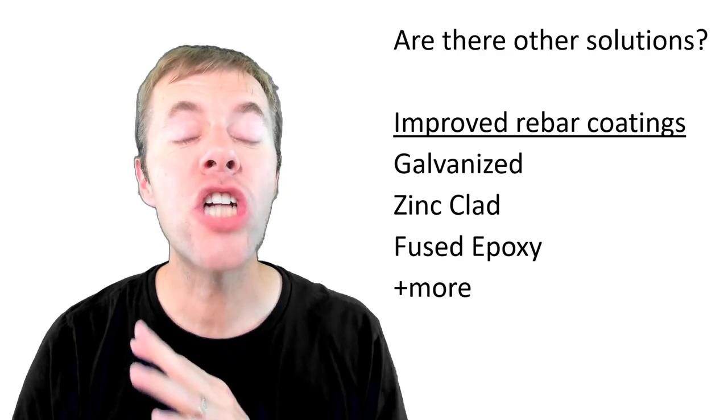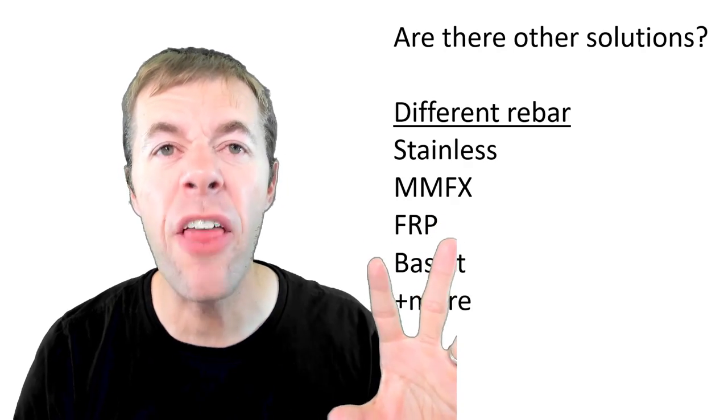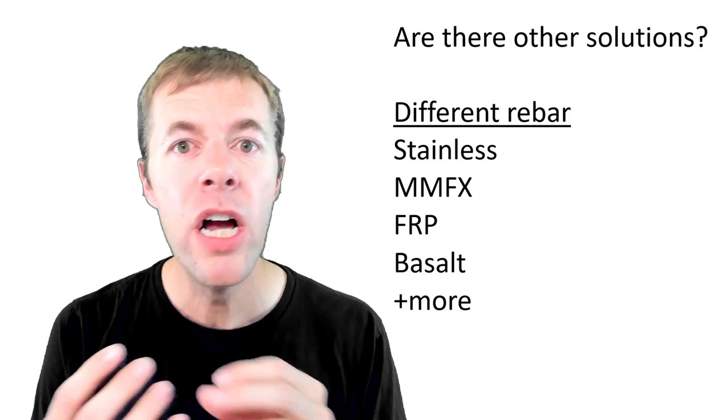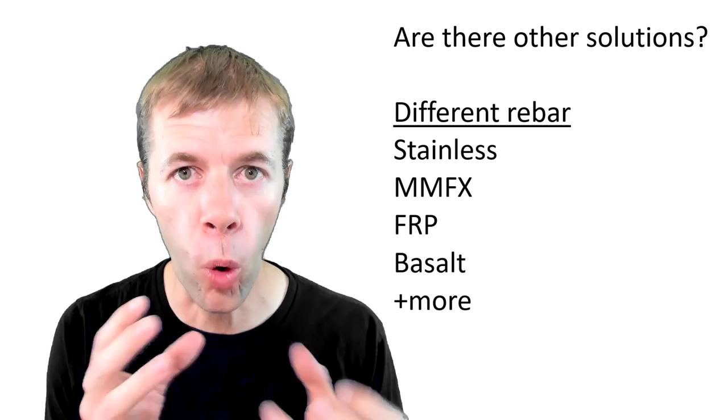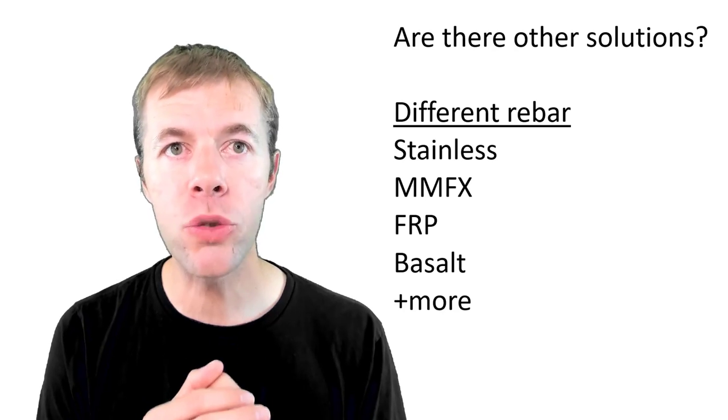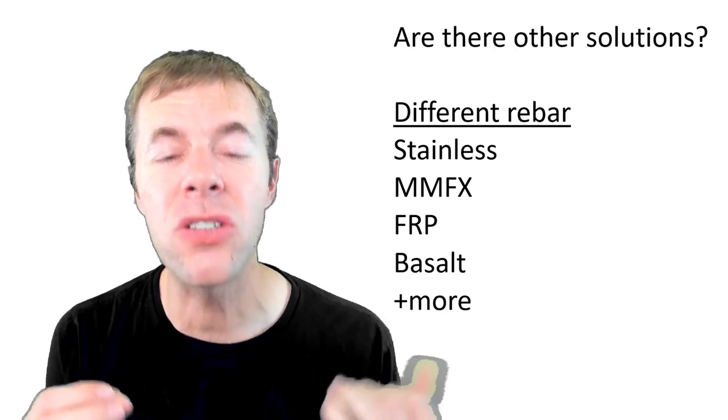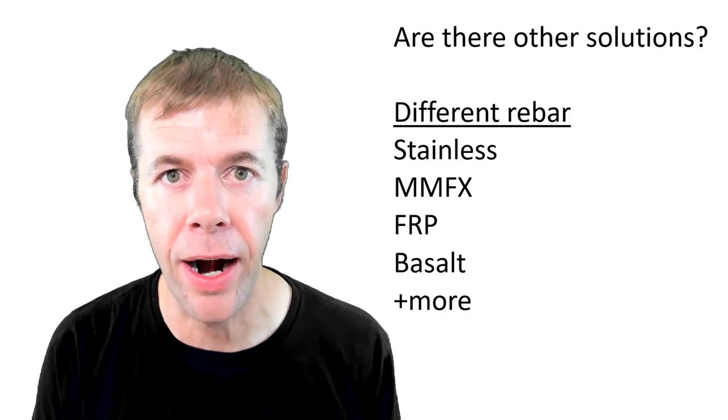Some people are trying to improve coatings around the rebar. Others are trying to change the rebar altogether - use different chemical types, use stainless rebar, use this chrome modified poor man's stainless rebar, use fiber reinforced plastics, use basalts or glass. There's all kinds of different solutions out there.